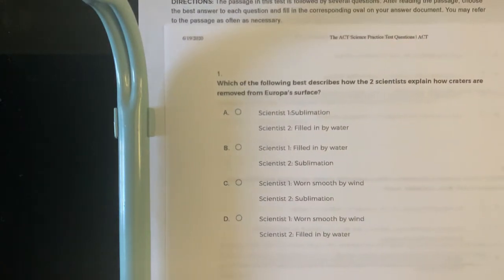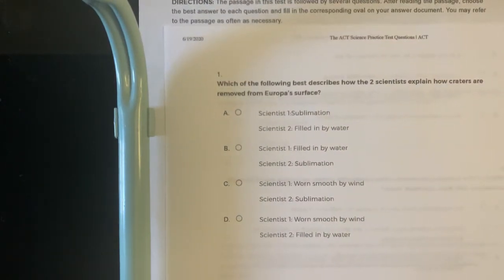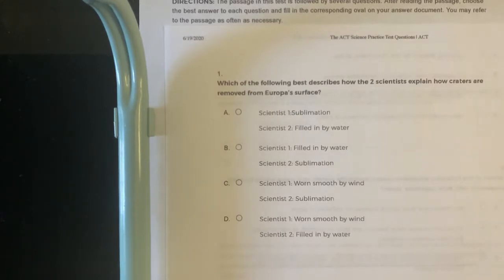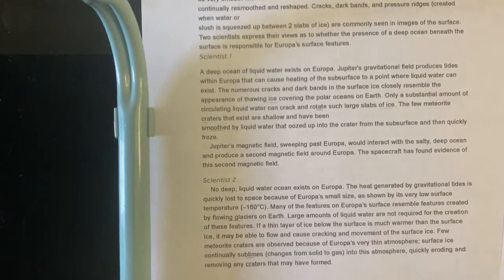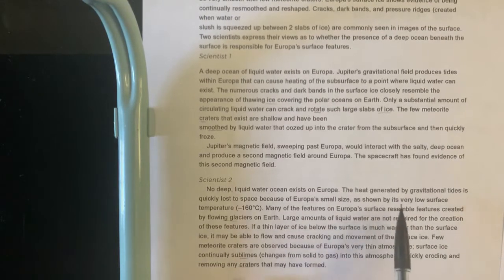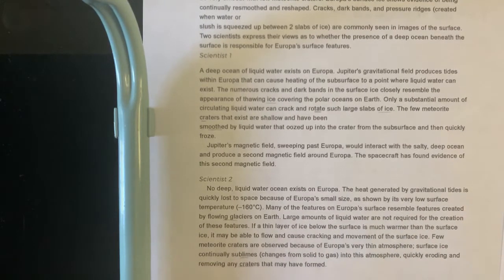So let's look at the question. Which of the following best describes how the two scientists explain how craters are made from Europa's surface? So basically this passage has to do with craters. I'm going to skip to Scientist 2 because it looks a little bit shorter and see what it says. So no deep liquid exists on Europa. The heat generated by the gravitational tides is quickly lost to space because of Europa's small size, which shows that it's very low temperature.